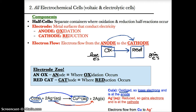Ag⁺, on the other hand, goes down from an oxidation state of +1 to zero, so it's being reduced. Based on 'anox and a red cat,' since Ag⁺ is reduced, that's where the cathode is. Since it's reduced based on oil rig, this is where electrons will be gained. Electrons flow from Cu at the anode to Ag⁺ at the cathode.